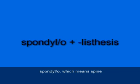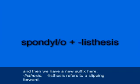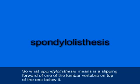We have one more spine-related term: spondylolisthesis (S-P-O-N-D-Y-L/O-L-I-S-T-H-E-S-I-S). Spondylo means spine, and the new suffix -listhesis (L-I-S-T-H-E-S-I-S) refers to a slipping forward. So spondylolisthesis means the slipping forward of one of the lumbar vertebrae on top of the one below it.